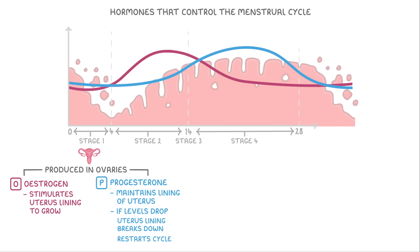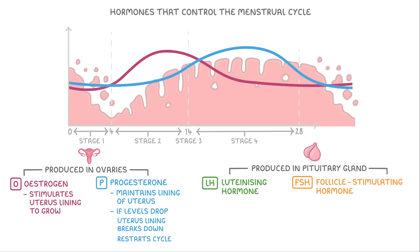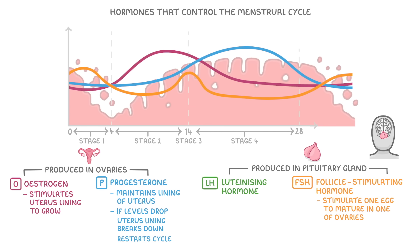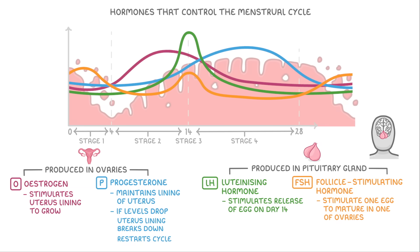The other two hormones are luteinising hormone (LH) and follicle-stimulating hormone (FSH), which are both produced in the pituitary gland, a small gland behind your eyes near your brain. The role of FSH is to stimulate one of the eggs to mature in one of the ovaries, while LH stimulates the release of that egg on day 14, which we call ovulation. So FSH stimulates the egg to develop, and LH causes it to be released.